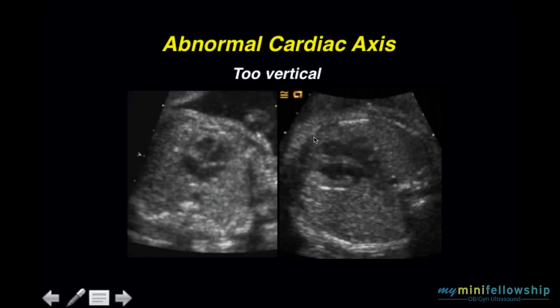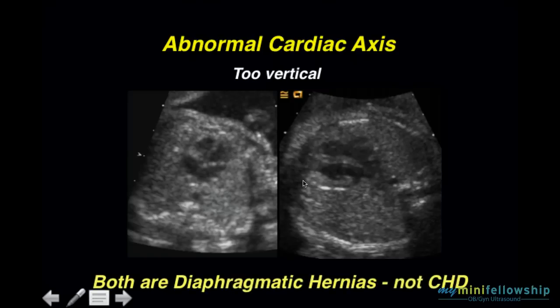Here, we see two hearts that are clearly too vertical. Now, in these two cases, both of these are diaphragmatic hernias, not congenital heart disease. The reason I show these two cases is because this case here is the most difficult congenital diaphragmatic hernia. I probably have the world's largest experience in diagnosing congenital diaphragmatic hernia, and this case here is the most difficult one I've ever encountered.